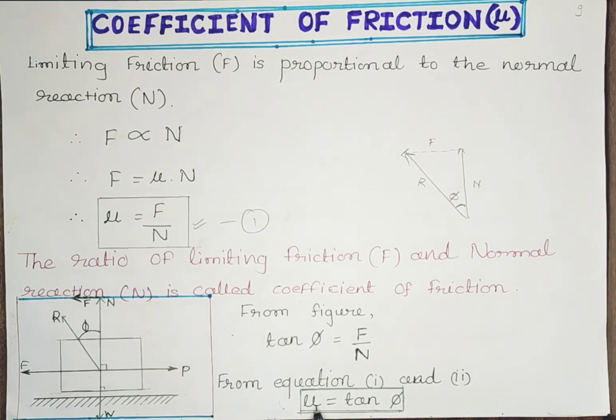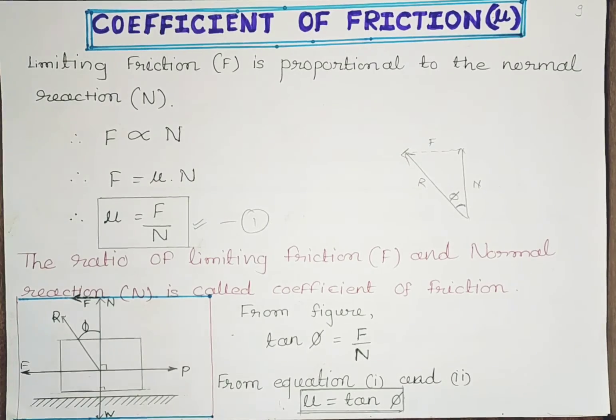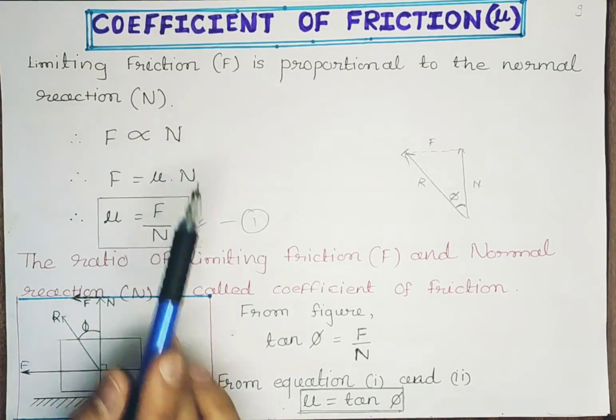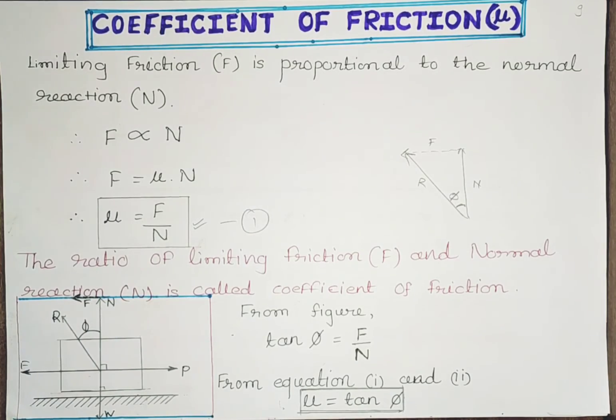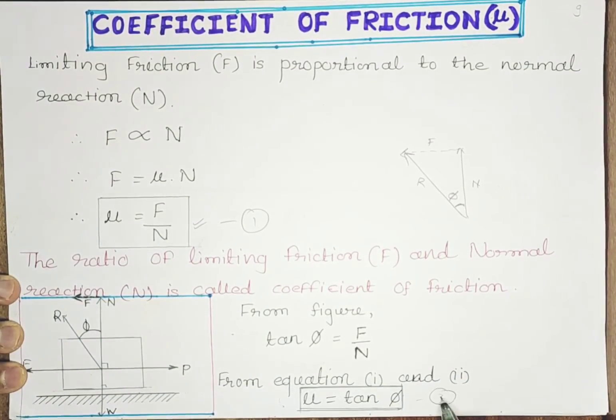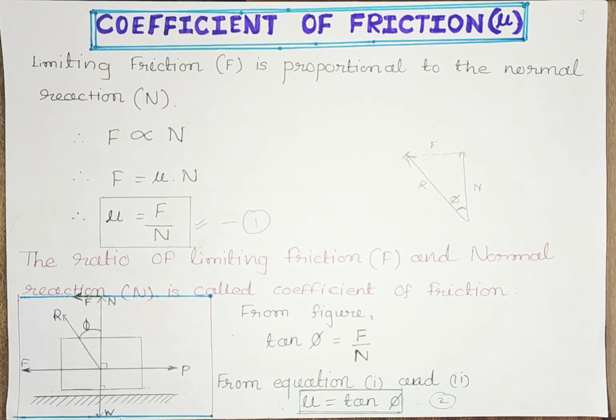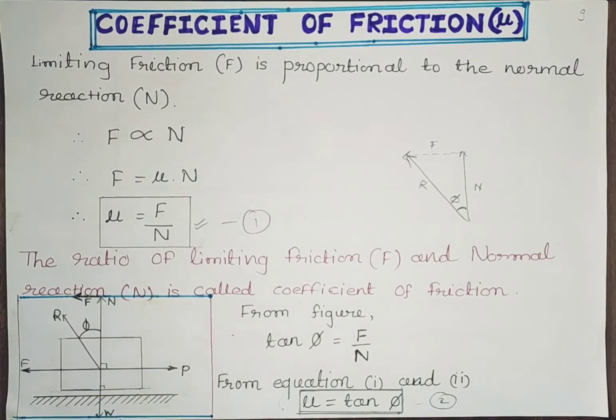Basically, coefficient of friction is a constant that we get from the result of limiting friction and normal reaction. This is the second formula which we need to memorize for numerical purposes. This was all about coefficient of friction, and we'll be continuing with the sixth lecture. Keep watching.